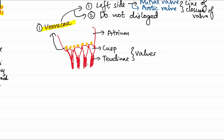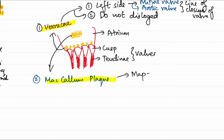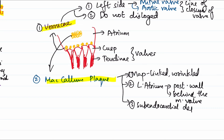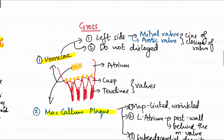The second gross feature is the McCallum plaque. It is a map-like, wrinkled, irregular vegetation. It is present on the posterior wall of the left atrium, behind the mitral valve, and is a subendocardial deposit. These are the key points about the McCallum plaque.